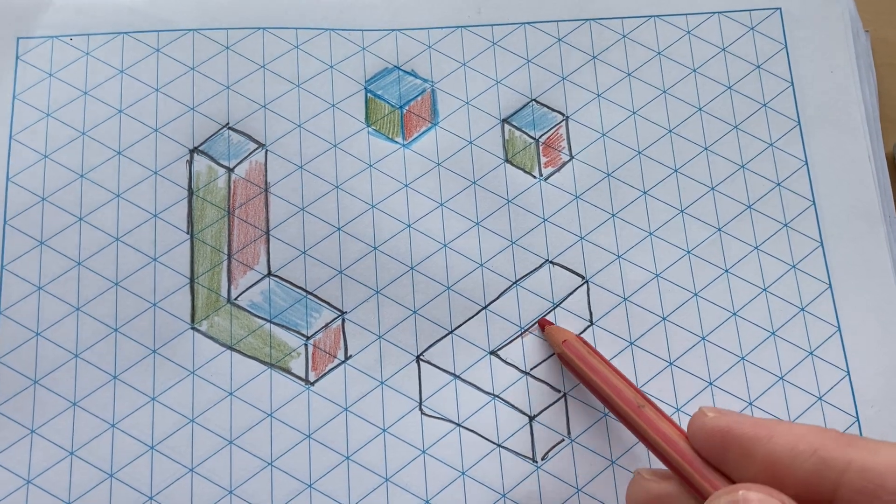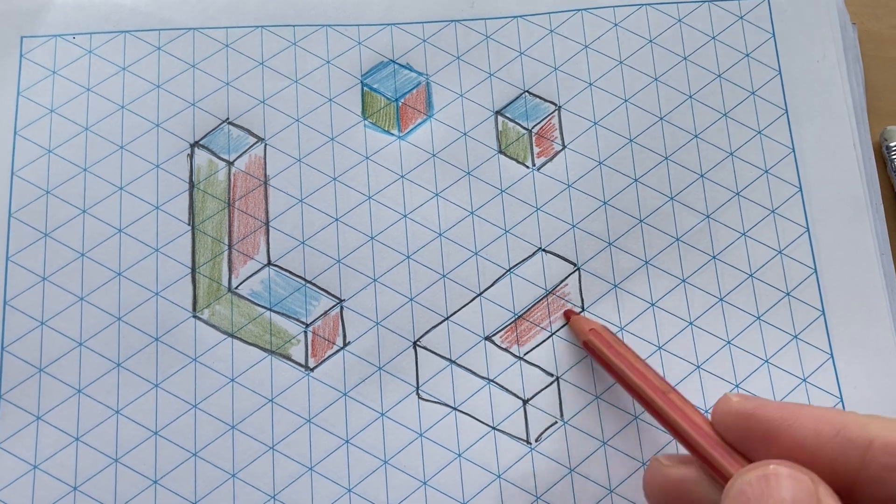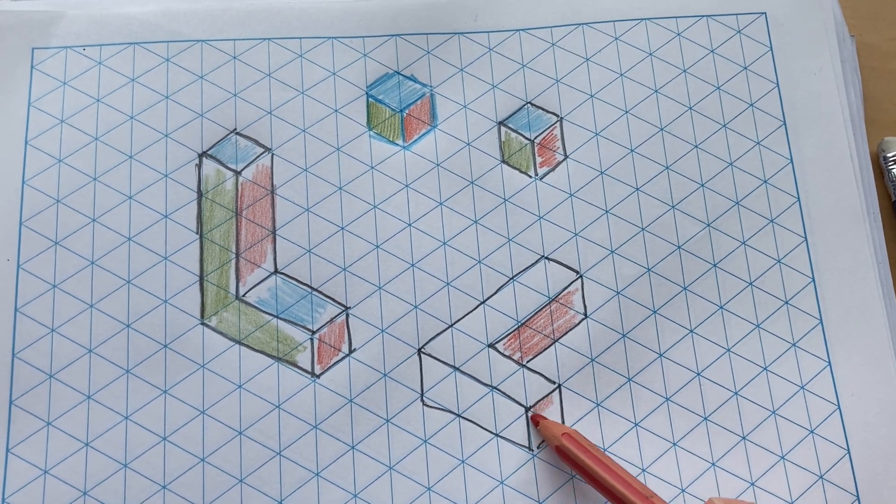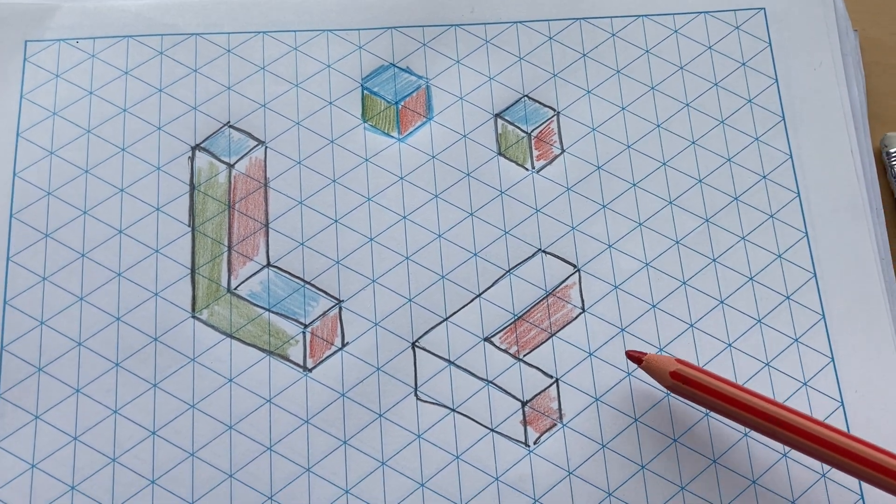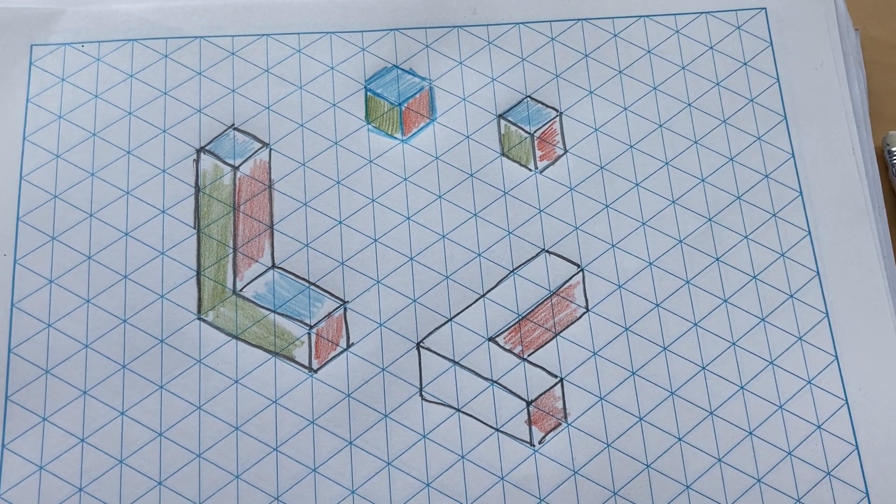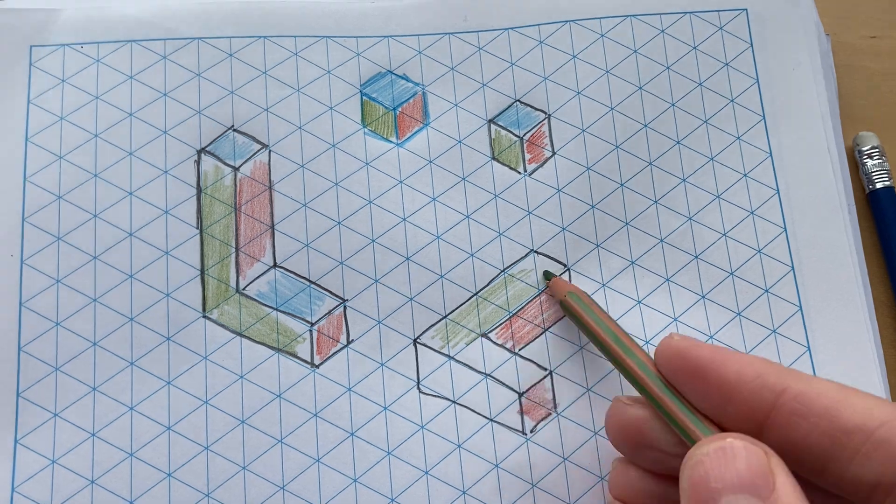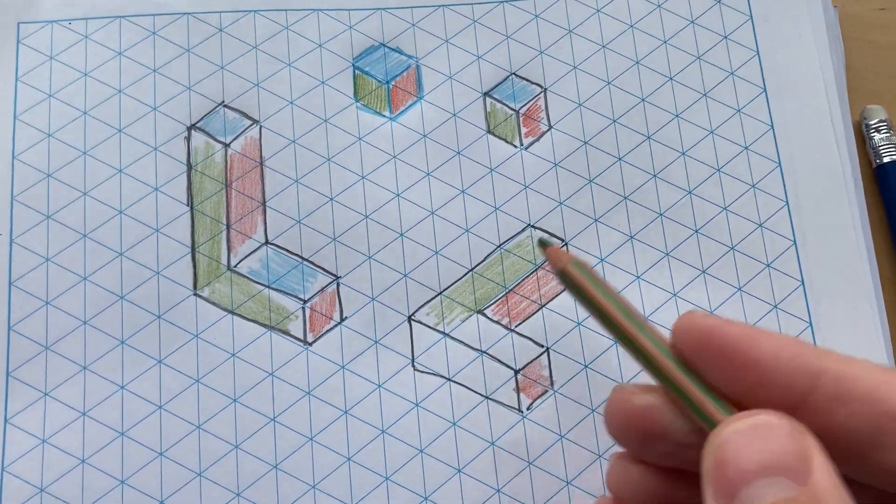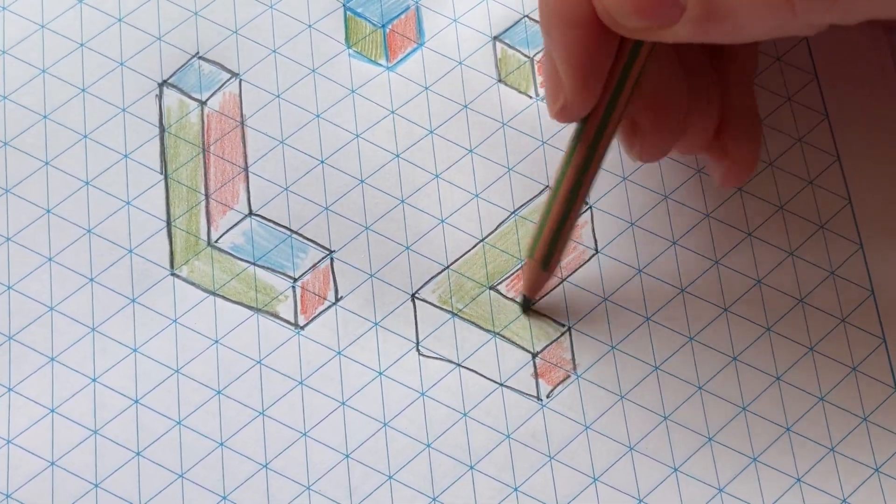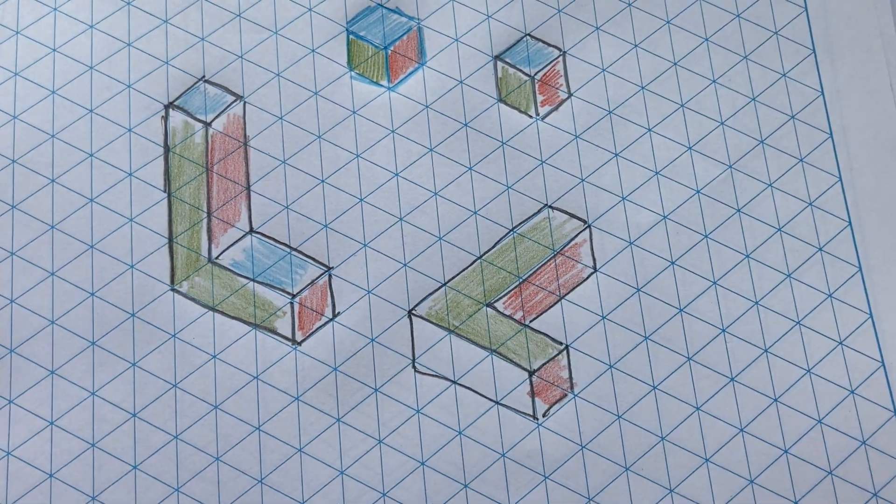So red is still going to be the one facing almost to the right, if I was looking from this way. But now that green has been tipped over, and you can see it like that.